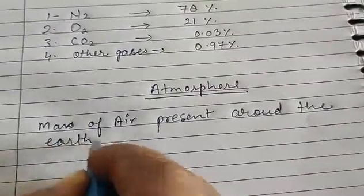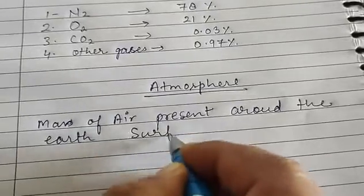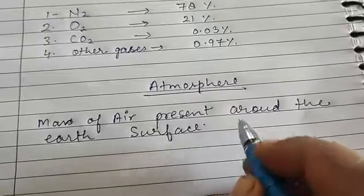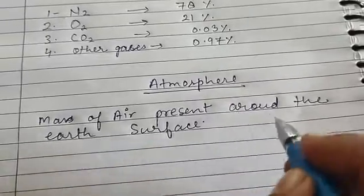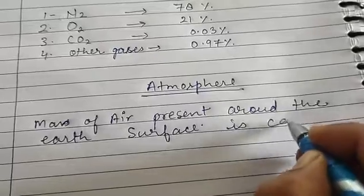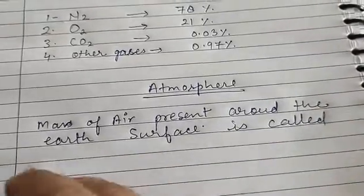The air mass around the earth's surface, surrounding it on all sides, is called atmosphere.